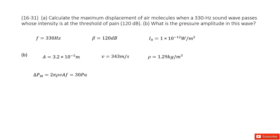The next question asks for the pressure amplitude. The formula for pressure amplitude is 2πρVaf. The constant 2π, density rho, wave speed V, amplitude a, and frequency f — all are now given or already found. Input all these numbers to get the answer. Thank you.